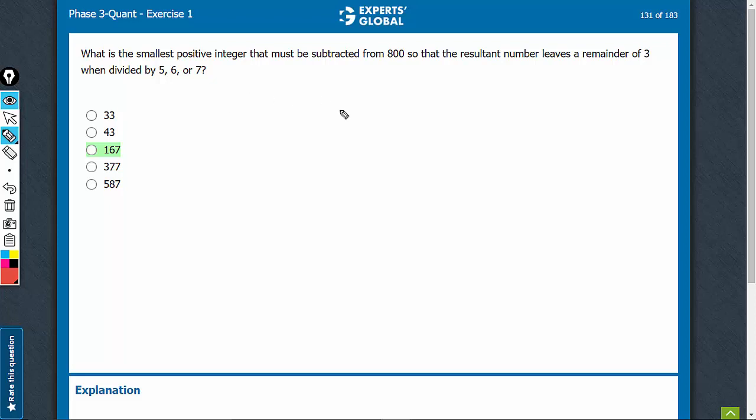A number that leaves remainder 3 when divided by 5, 6, 7 has to be a multiple of 5, 6, 7, and 3 added to it.